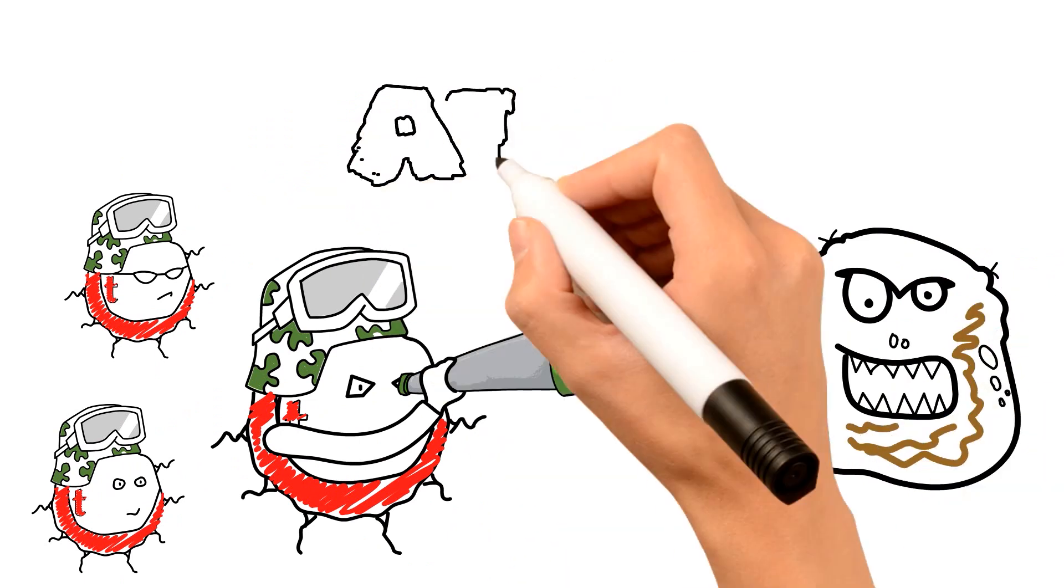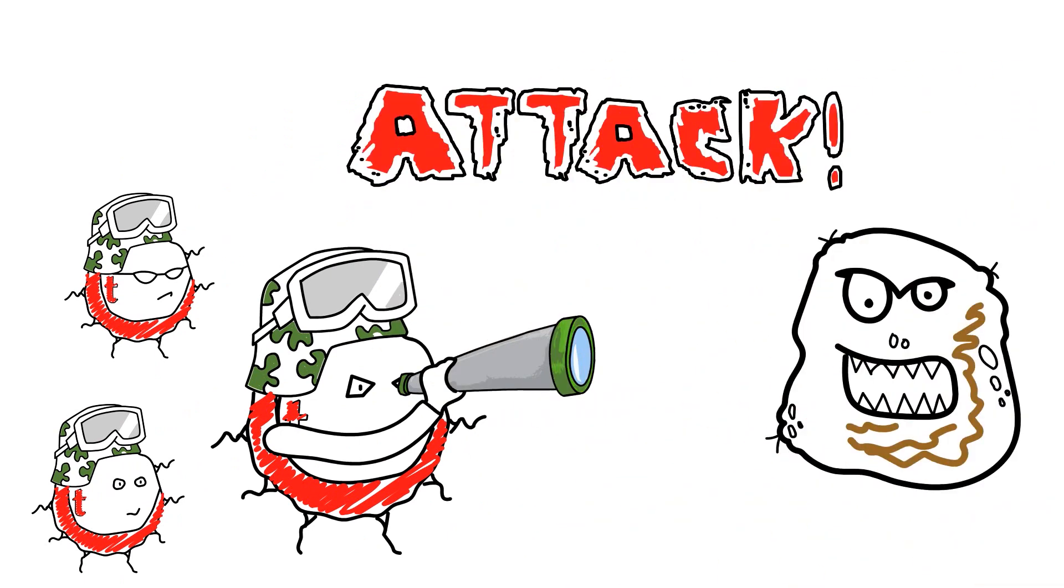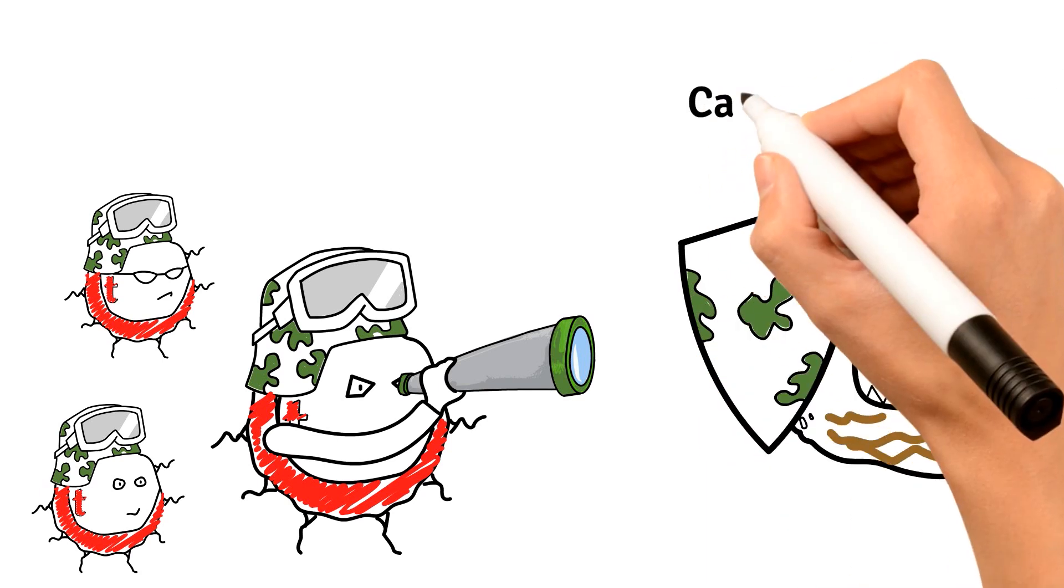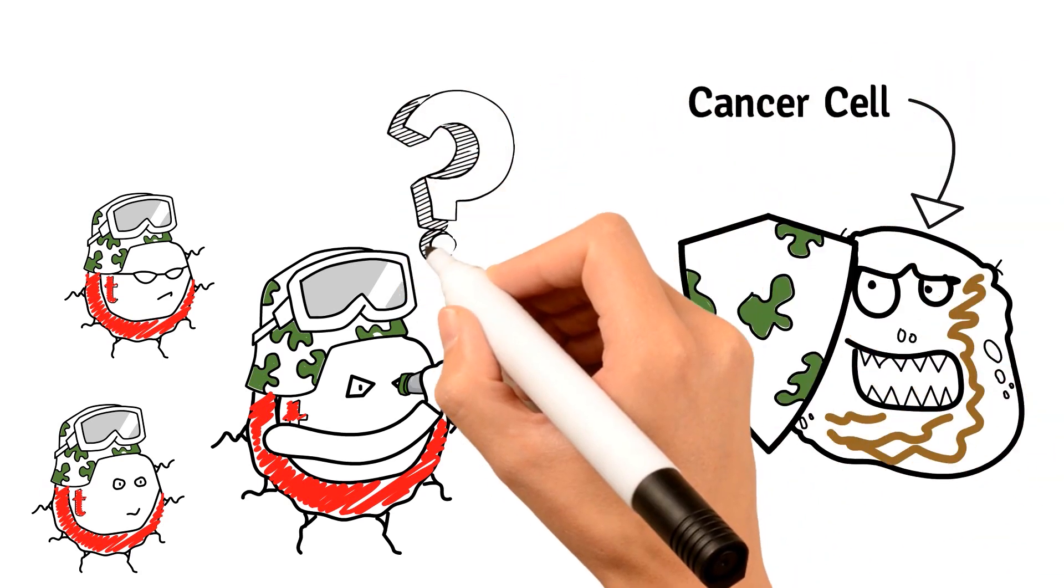They relentlessly fight off foreign invaders dangerous to the body. But T-cells don't always recognize and attack cancer cells, thus rendering the body's own immune system ineffective in the fight against cancer.